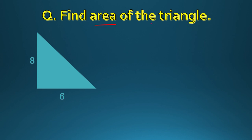In this question, they say find the area of the triangle. First, write the formula: area is equal to half times base times height. You can see this is 90 degrees, so this side will be taken as height and this will be taken as base. So this is half times base — 6 — times height — 8. You can cancel: 6 divided by 2 is 3, and 3 times 8 is 24. No unit like meter or centimeter is given, so you take it as unit square. Like this, you can find the area.